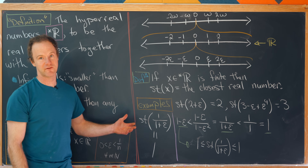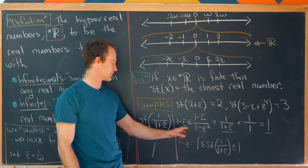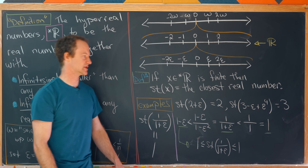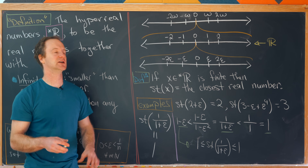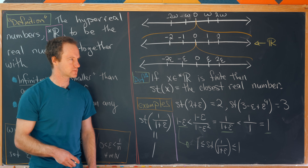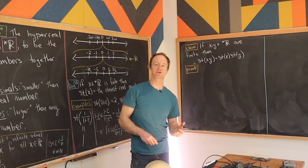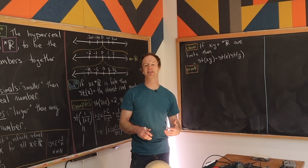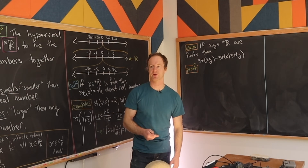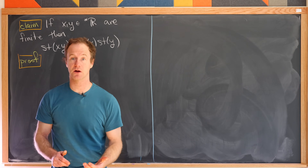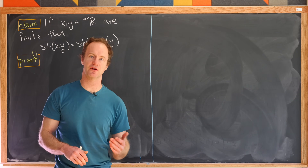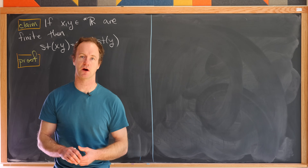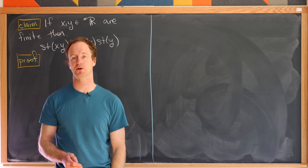When we take the standard part, the strict inequality doesn't hold anymore — it turns into a non-strict inequality — but we won't go over why that is carefully. Before moving on to derivatives, let's prove a simple result about how the standard part operation interacts with multiplication on hyperreal numbers.